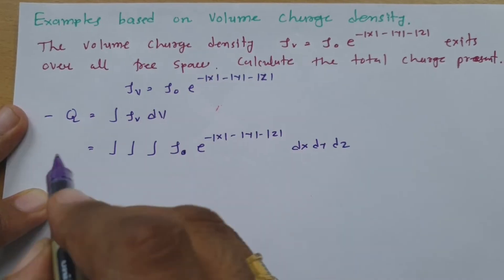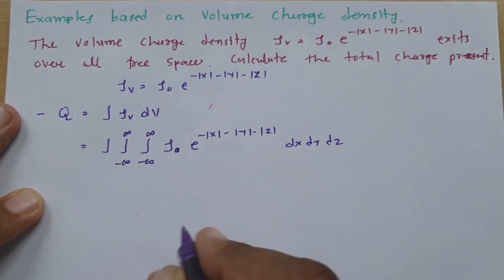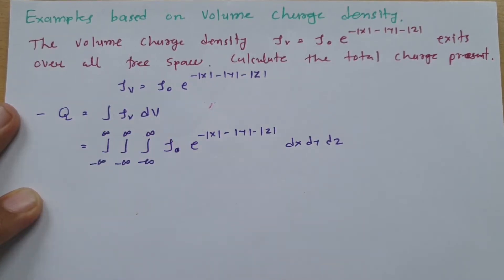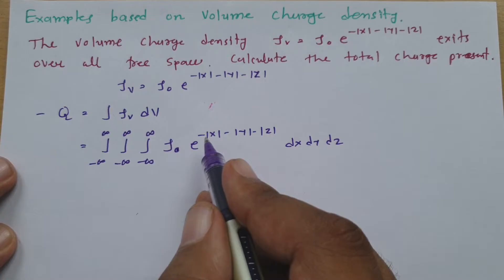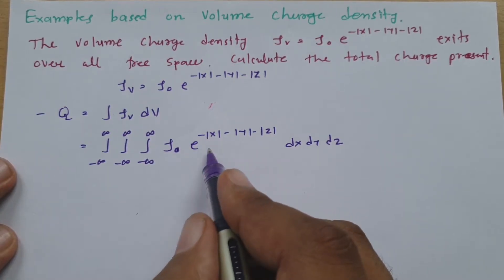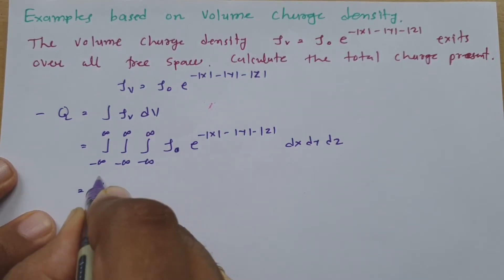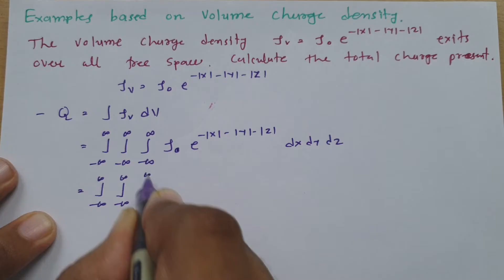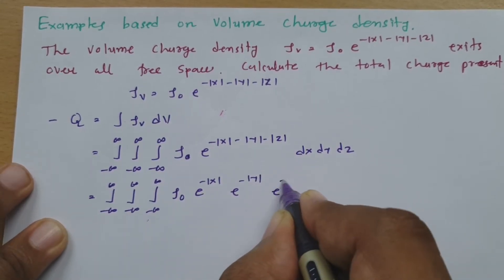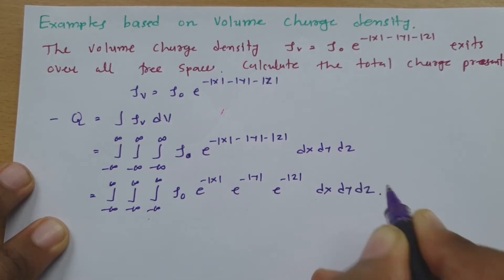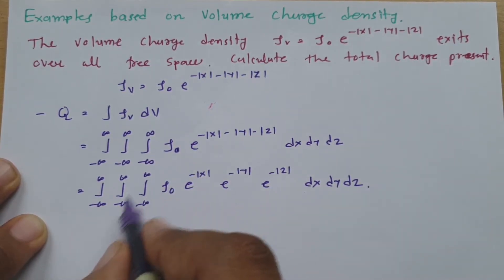This exists over all free space, so x ranges from minus infinity to infinity, y ranges from minus infinity to infinity, and z ranges from minus infinity to infinity. Now, we have |x|, |y|, and |z| in the exponent. We can rewrite this as e^(-|x|) * e^(-|y|) * e^(-|z|) dx dy dz. All three are in multiplication.